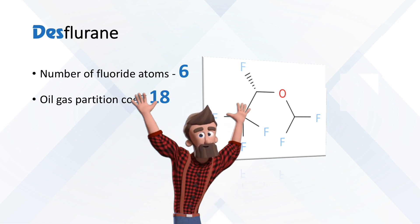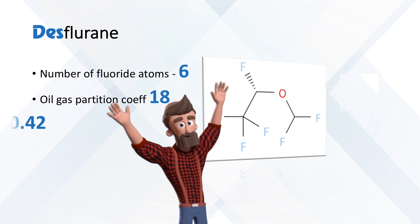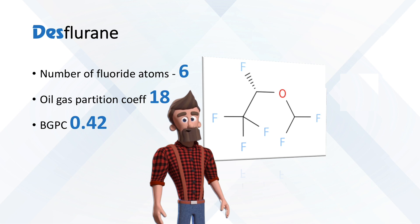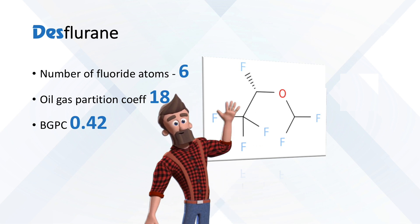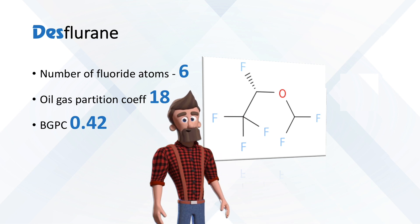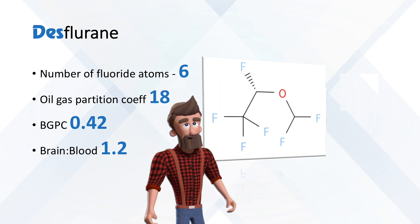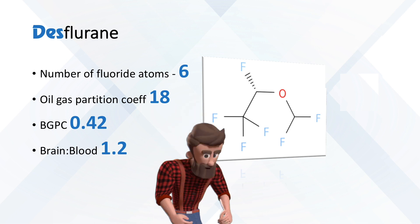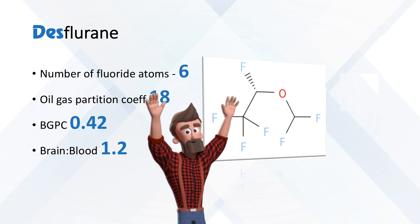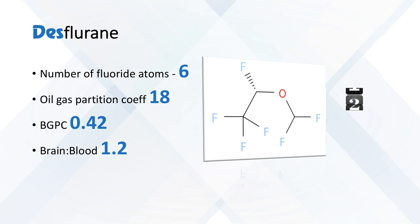The oil/gas partition coefficient of desflurane is 18 — and 18 is 3 times 6. The blood/gas partition coefficient of desflurane is 0.42 — 4 plus 2 is 6. The brain/blood partition coefficient is 1.2, which is one-fifth of six.